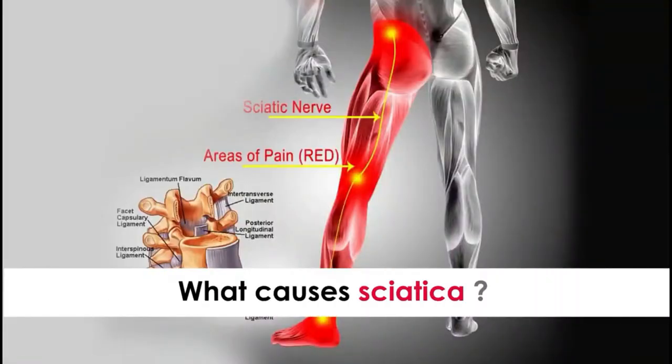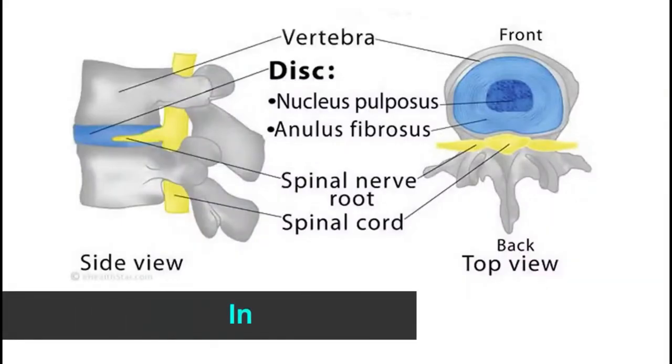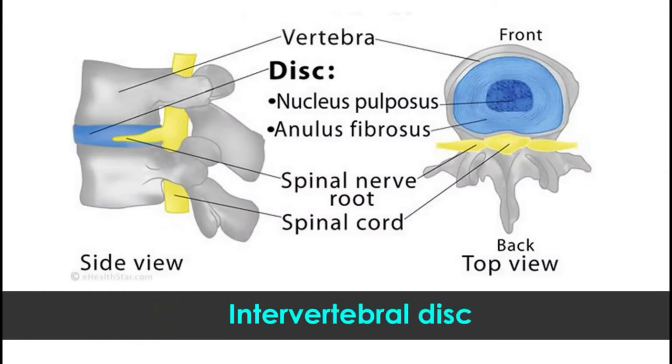What causes sciatica? Sciatica is low back pain because of a slip disc compressing on the nerve. Sciatica is because of a disc within your spinal cord, what you call an intervertebral disc. This, because of degeneration and various causes, comes out — which is called a prolapse. This compresses the nerve root and causes pain along your leg.